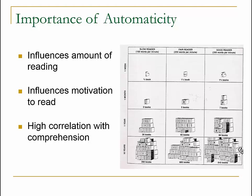What happens with lacking automaticity is it influences the amount of reading — kids who can't read well aren't going to spend much time doing it. It influences their motivation, so those who are slow and non-automatic are going to decrease in their willingness to try. There's also a very high correlation with comprehension — a one-minute curriculum-based assessment of words read accurately is very indicative of what a student is going to do on a much longer comprehension test.